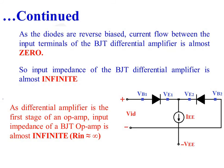As the diodes are in the reverse biased condition, current flow between input terminals of the BJT differential amplifier is almost zero. So input impedance of the BJT differential amplifier is almost infinite. As the differential amplifier is the first stage of an op-amp, the input impedance of a BJT operational amplifier is almost infinite.